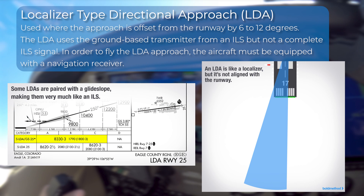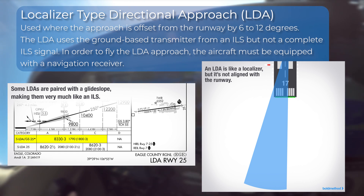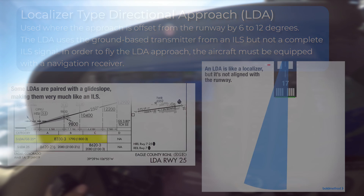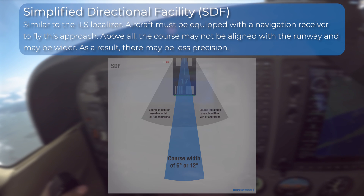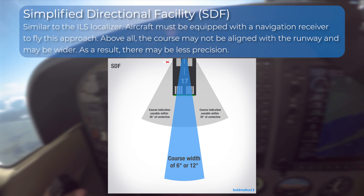The localizer-type directional approach is used where the approach is offset from the runway by 6 to 12 degrees. The LDA uses the ground-based transmitter from an ILS, but not a complete ILS signal. In order to fly the LDA approach, the aircraft must be equipped with a navigation receiver. Simplified directional facility approaches are similar to the ILS localizer. Aircraft must be equipped with a navigation receiver to fly this approach. The course may not be aligned with the runway and may be wider, resulting in less precision.